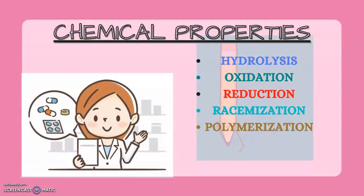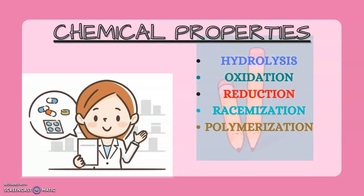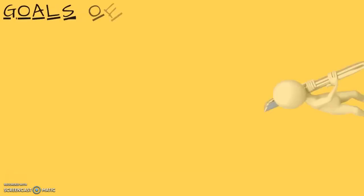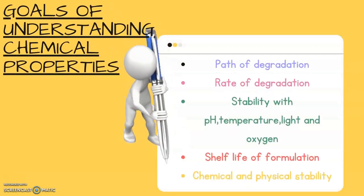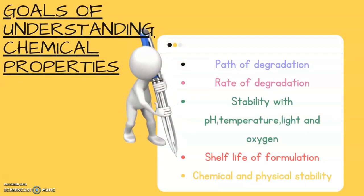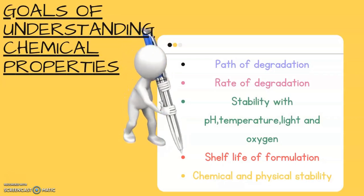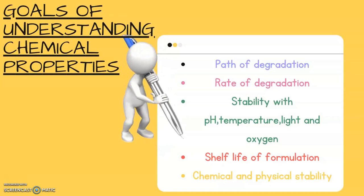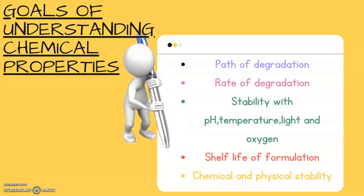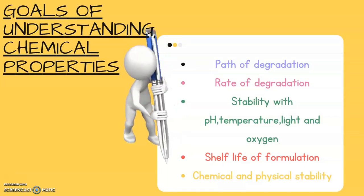Now, moving on to chemical properties. We have five different chemical properties in pre-formulation studies: hydrolysis, oxidation, reduction, racemization and polymerization. Goals of understanding chemical properties are: path of degradation can be understood, rate of degradation can be predicted, stability with pH, temperature, light and oxygen can be studied, shelf life of formulation and chemical and physical stability can be known.